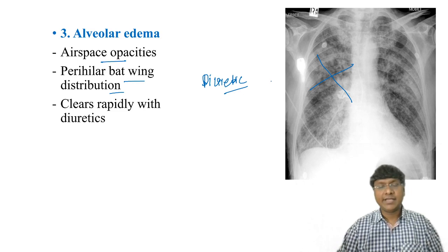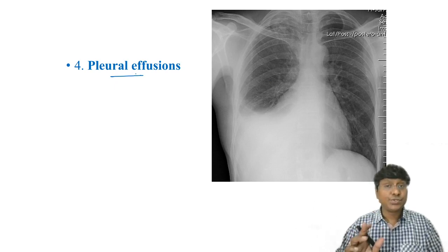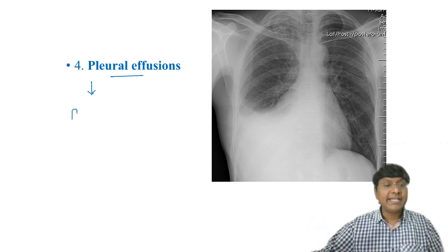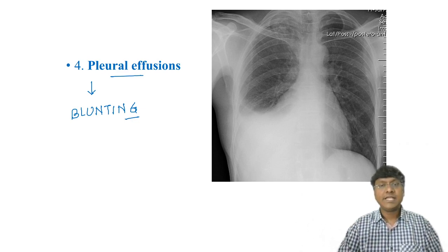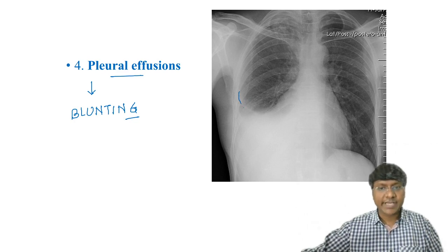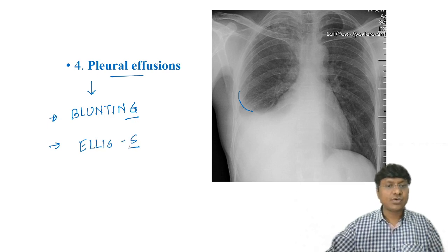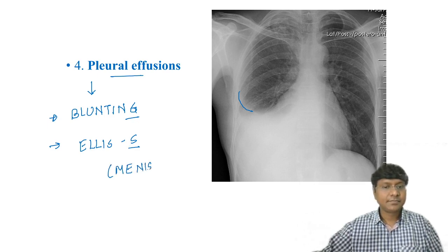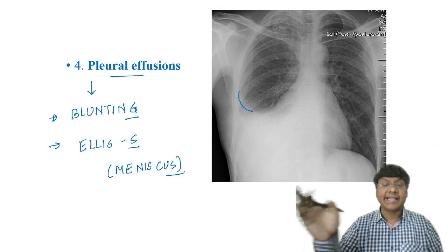From the alveoli, fluid then enters the pleural space resulting in pleural effusion. On chest X-ray, the earliest sign of pleural effusion is blunting of the costophrenic angle. You will also see a curve called the Ellis S-Schaefer curve, also known as the meniscus sign, which appears in the later stages of heart failure.